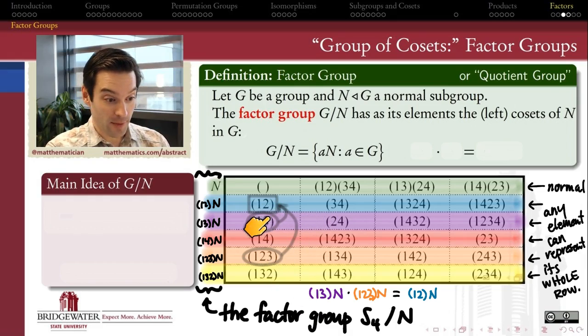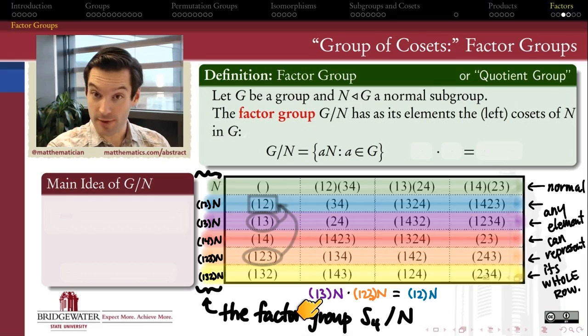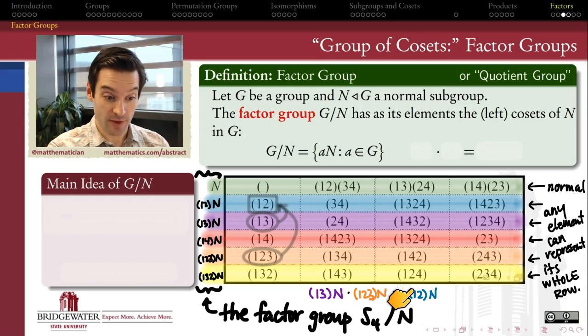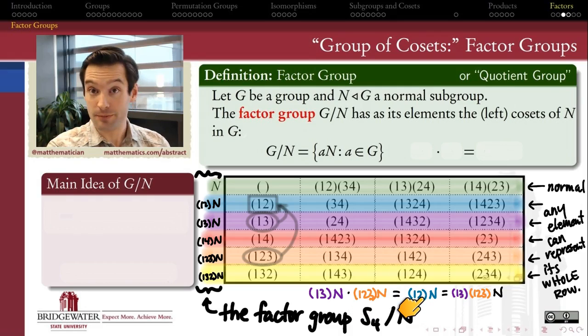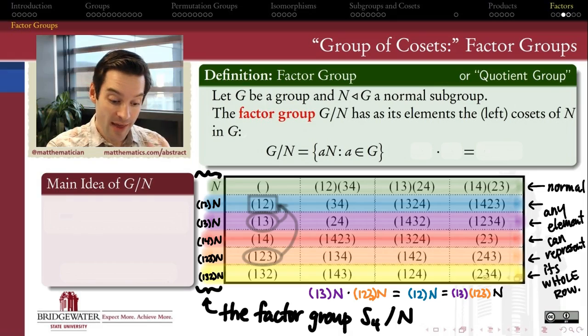So for example, any element from the purple row, which is the coset of (1 3), multiplied by any element from the orange row, the coset of (1 2 3), is going to give me some element from the blue row, which is the coset of (1 2). And we know that works because (1 3)N · (1 2 3)N is equal to (1 3)(1 2 3)N = (1 2)N. The coset of the product is the same as the product of the cosets.